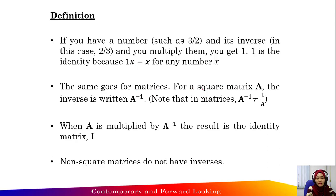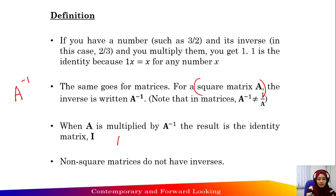For a square matrix A, the inverse is written as A to the power of negative 1. This is the notation for A inverse. Note that in matrices, A to the negative 1 is not equal to 1 over A. When matrix A is multiplied by A inverse, the result is the identity matrix.